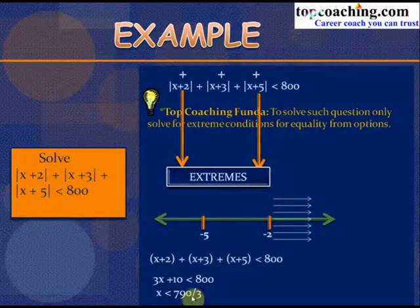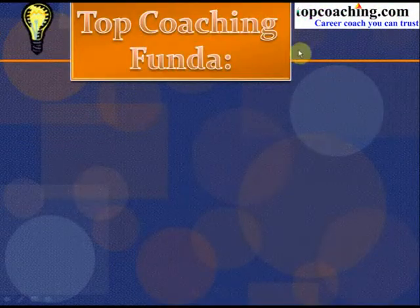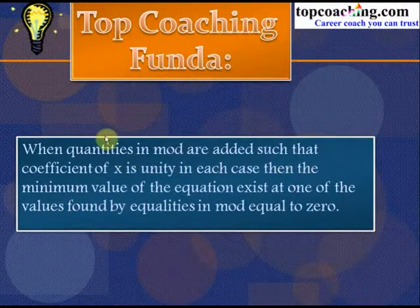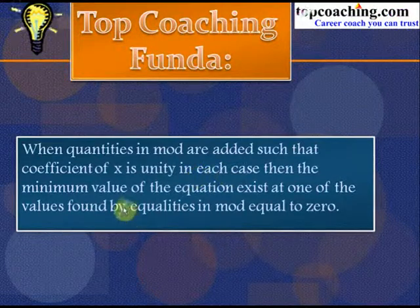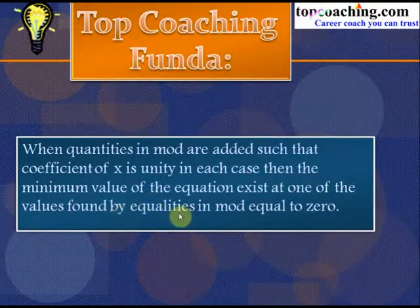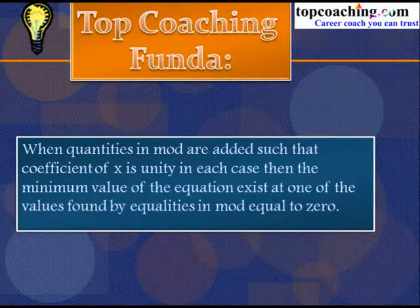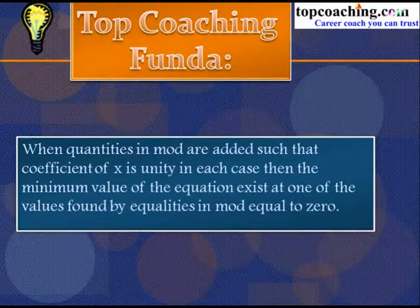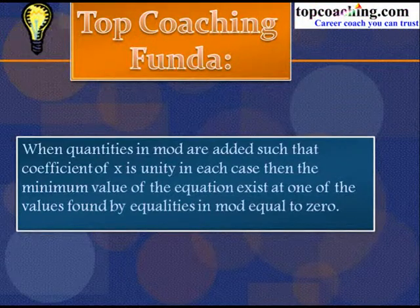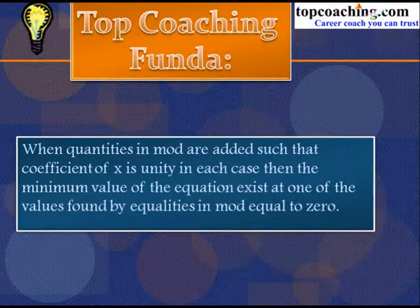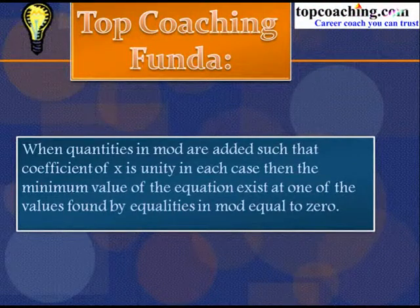So for x > −2, the solution is −2 < x < 790/3. A key coaching funda: when quantities in modulus are added and the coefficient of x is unity in each term, the minimum value of the expression exists at one of the values found by equating the modulus expressions to zero. Equate all terms inside the modulus to zero, and the minimum value occurs at one of those points.